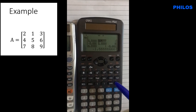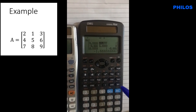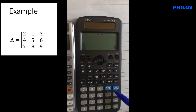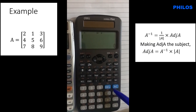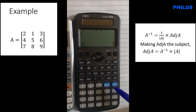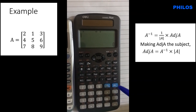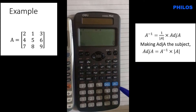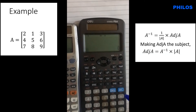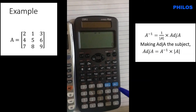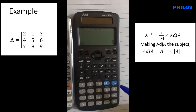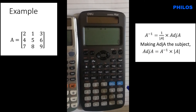To get the adjoint of this matrix, you must know the formula: the inverse of matrix A equals (1 / determinant of A) times the adjoint of A. If you make adjoint of A the subject, you get: adjoint of A = A^(−1) times determinant of A. So we can easily find the adjoint using this relationship.